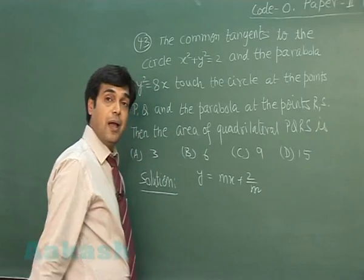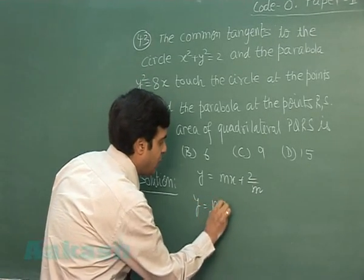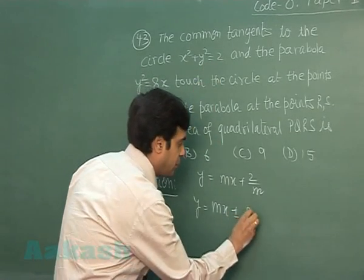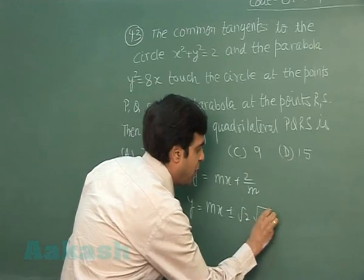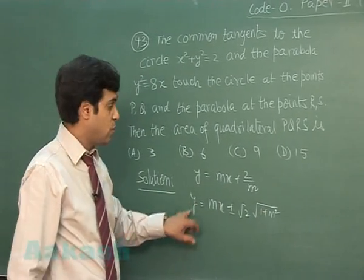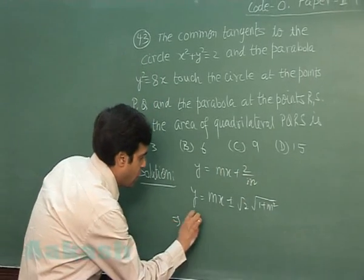And for the circle we can take y = mx ± √2√(1 + m²). It is the same line so we can equate the constant term: 2/m² = 2(1 + m²).